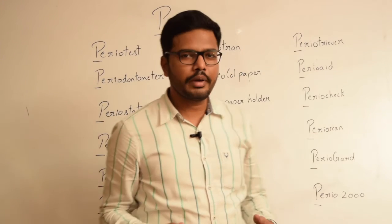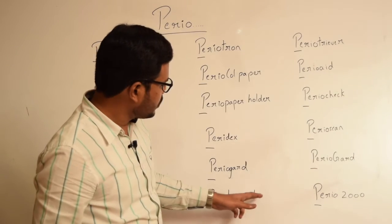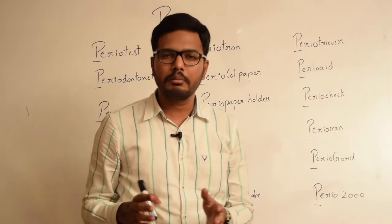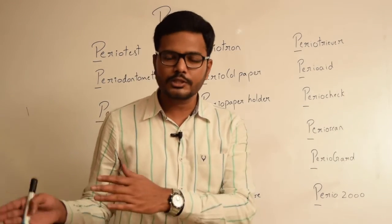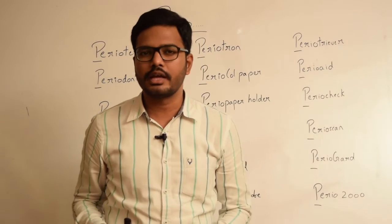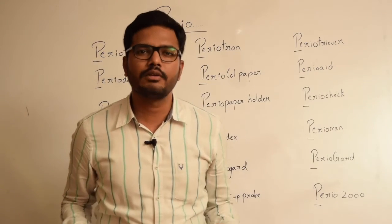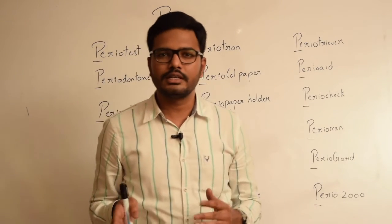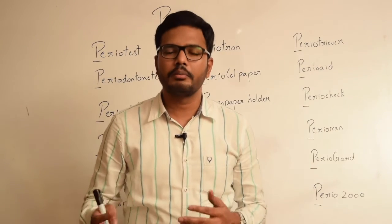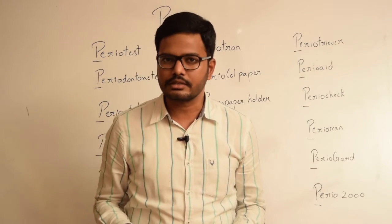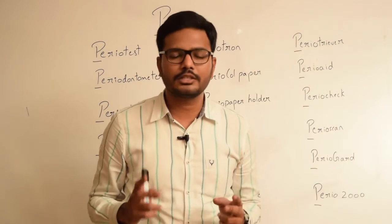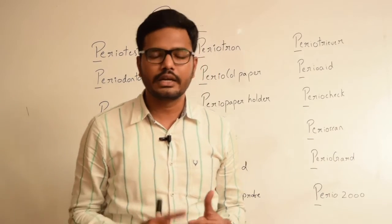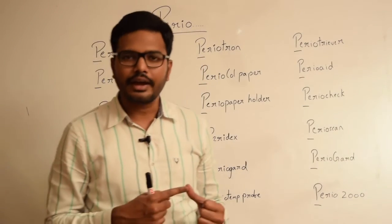Now moving on to periotemp probe. As the name indicates, it is used for measuring pocket temperature differences as low as 0.1 degrees centigrade from a referenced subgingival temperature. Basically you are trying to assess the disease activity by knowing the temperature differences. This probe has two light emitting diodes — one is red and the other one is green.